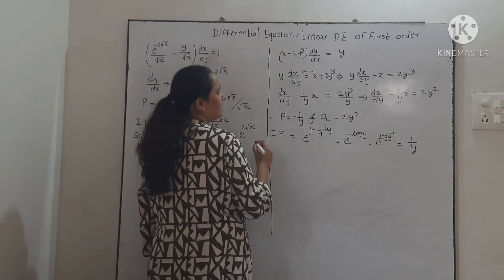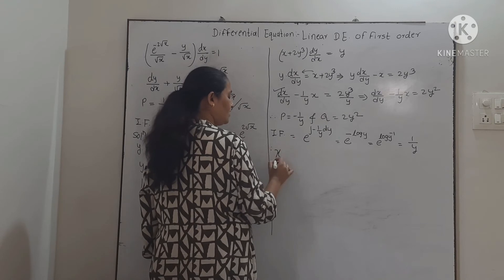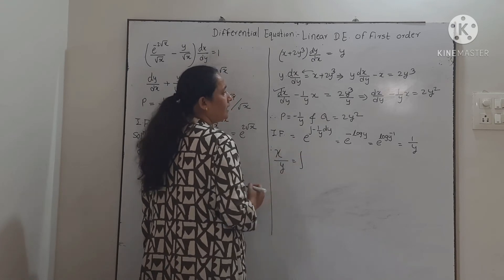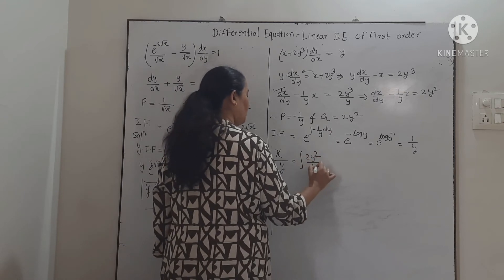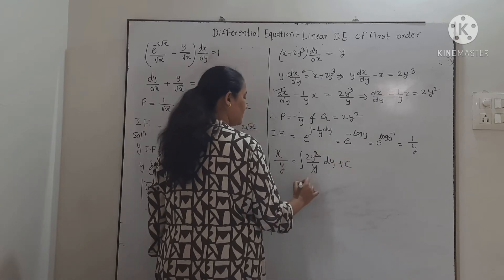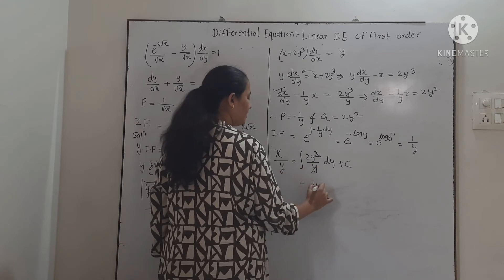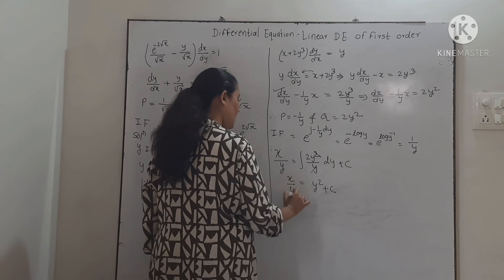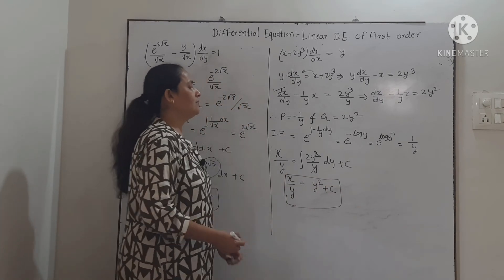Since this is linear in x, the solution is x · (1/y) = ∫2y² · (1/y) dy + c = ∫2y dy + c. One y cancels, the integral of y is y²/2, and the 2s cancel, giving y². Therefore the solution is x/y = y² + c.